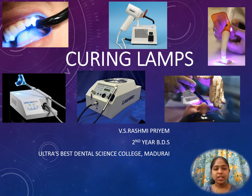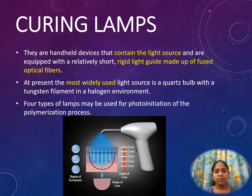Hello and welcome to today's topic: Curing Lights. Curing lights or curing lamps are handheld devices that contain a light source and are equipped with a relatively short rigid light guide made up of fused optical fibers.